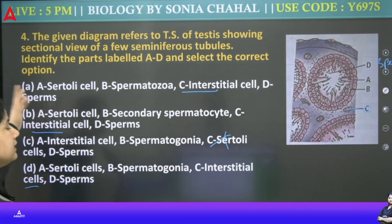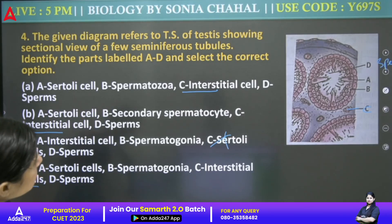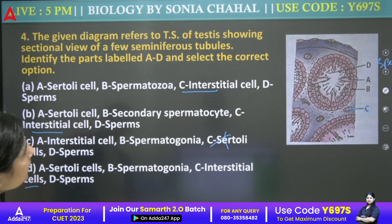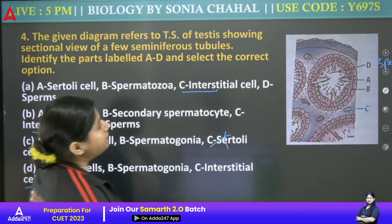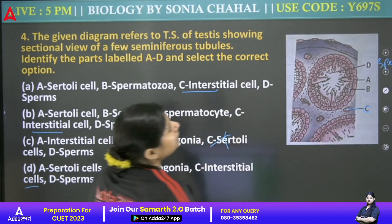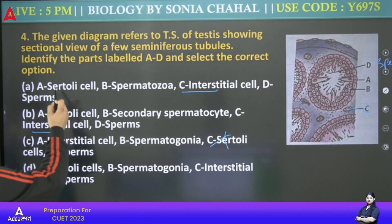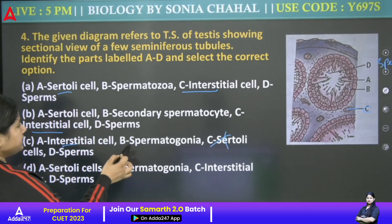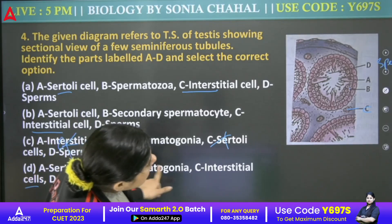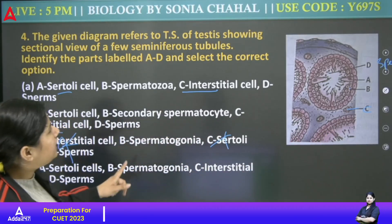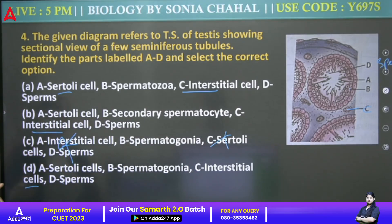A is our Sertoli cell — for sure, A is our Sertoli cell. A first is Sertoli. Then B — B is secondary spermatocyte or spermatogonia. B is spermatogonia. Not interstitial — Sertoli, then spermatogonia. C is our interstitial cell.